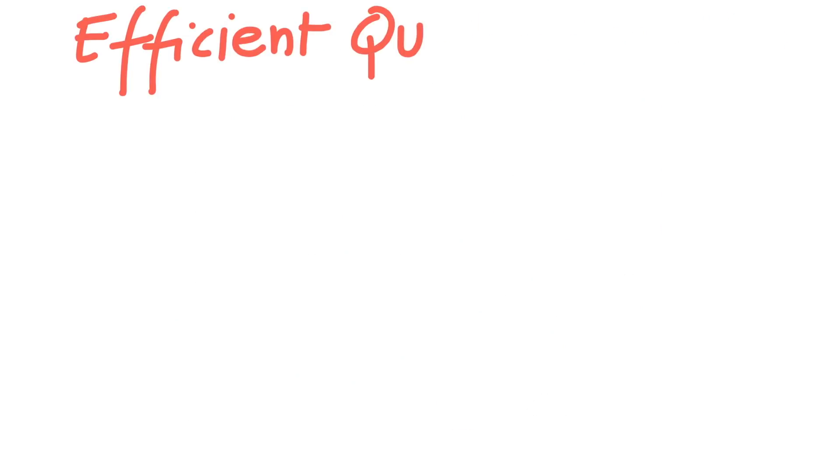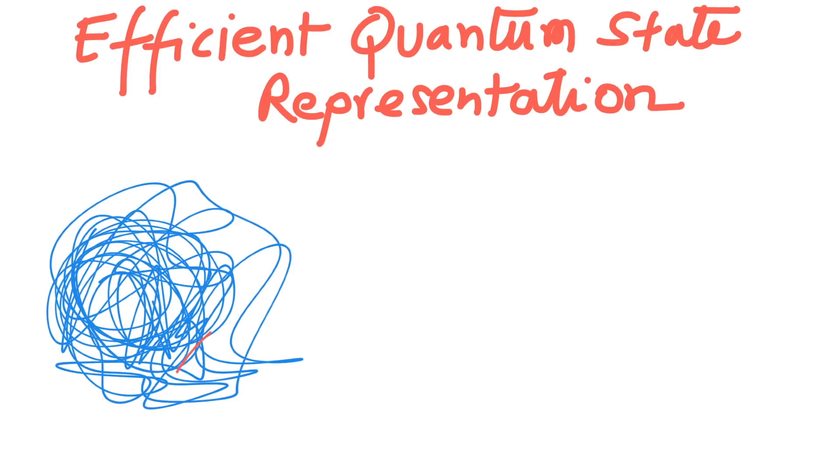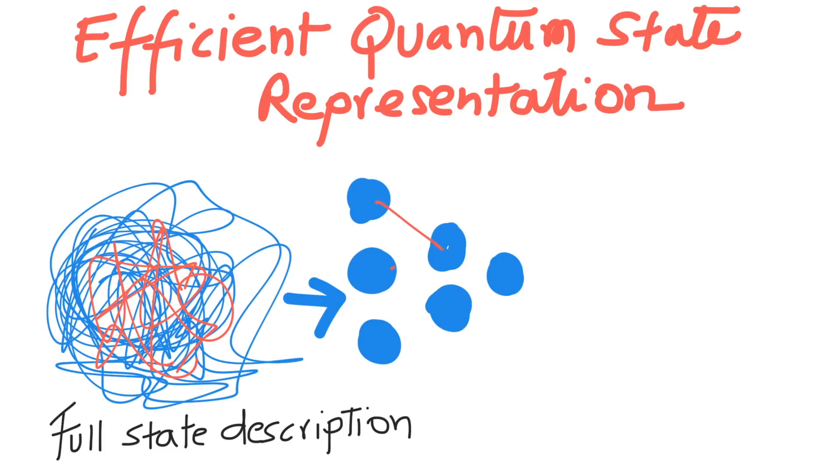Such networks are also highly efficient in describing quantum states, as neural networks are really good at using symmetries and getting rid of redundancies to compress information.